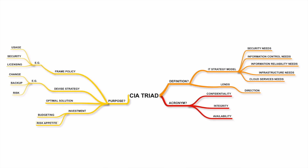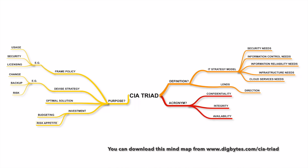As we go forward, business models will depend on IT not only as a back-office service provider but as a key enabler for business growth. IT services will go beyond corporate boundaries and engage with other businesses and directly with customers. This makes the CIA Triad model a crucial aspect of IT strategy.